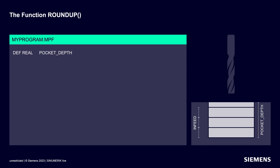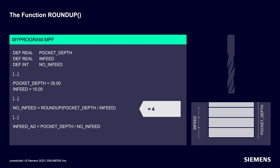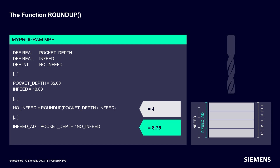To do this, we again define one variable for the pocket depth, one for the desired infeed, and another for the calculated number of infeeds with a constant cutting depth. As in our previous example, we assign values to the variables again: 35 mm as the pocket depth and 10 mm for the desired infeed. The round up function is now used to increase the fractional number of infeeds to the next higher even value — in our case from 3.5 to 4. Finally, the adjusted infeed needs to be calculated. In our case, this would be 8.75 mm instead of the original 10 mm. This completes the settings.